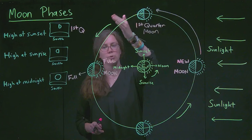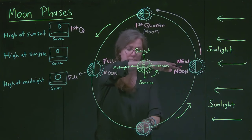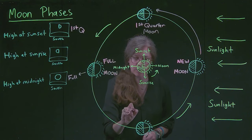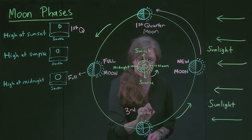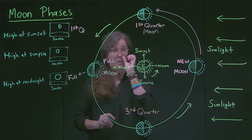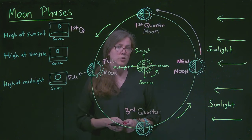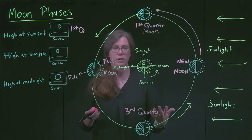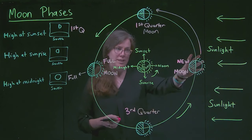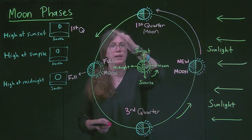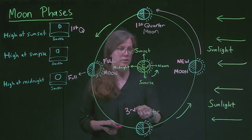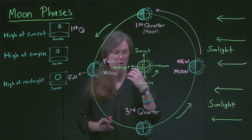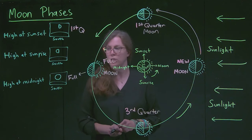So: new Moon, first quarter Moon, full Moon. Then we go around, and by the time we get to this Moon at the bottom, we've gone one quarter, two quarters, three quarters of the way around — so we call this the third quarter Moon. There are many resources online that call it the last quarter, but I strongly recommend you do not, because in any sport with quarters, the last quarter is the fourth quarter. The third quarter Moon is three quarters of the way around the cycle, and there's still lots of Moon cycle left.